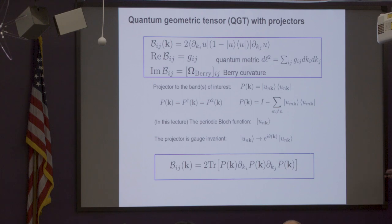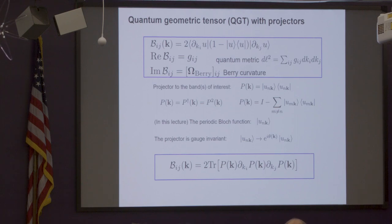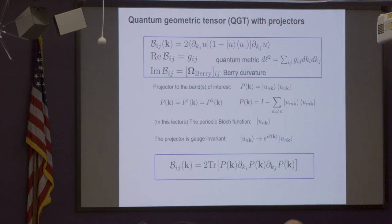The projector has nice properties: it's Hermitian, and its square is the same as the projector. One thing that is kind of nice to think about: you might think this has just properties of the band itself, but actually it has properties of all other bands because there is a completeness relation. So the projector can also be written as unity minus all other bands except yours — it tells about all the bands. And it's gauge invariant as such, so you don't need to worry.